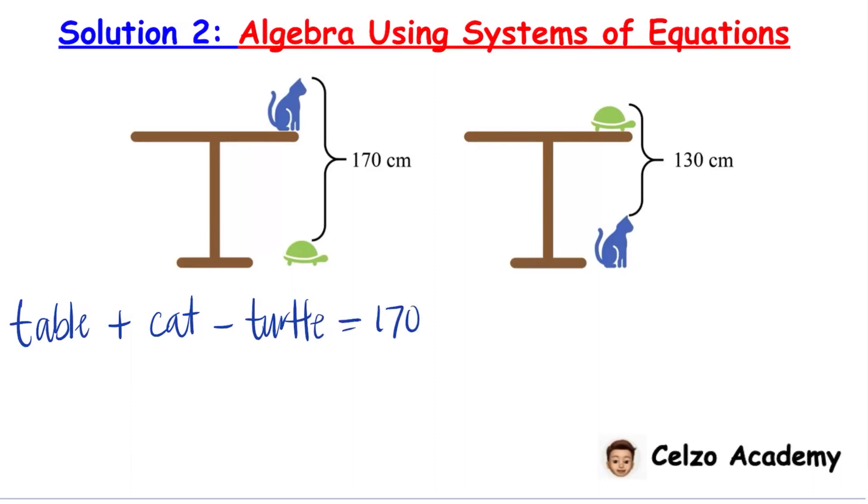For the second equation, the height of the table plus the height of the turtle minus the height of the cat is equal to 130 centimeters.